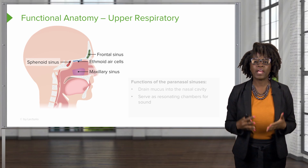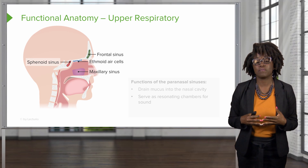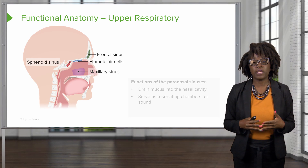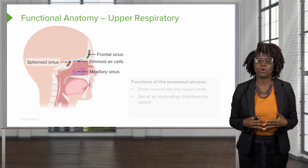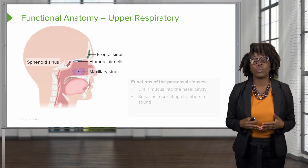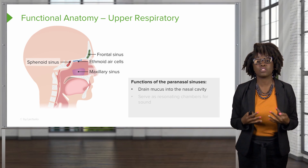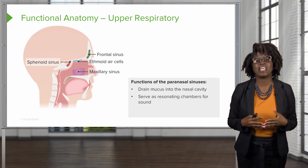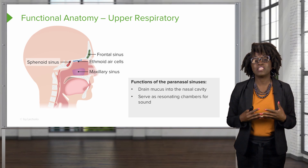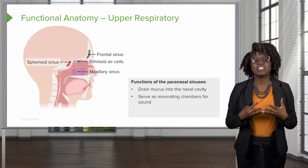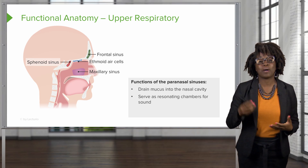Along with this, we also have our paranasal sinuses. There are four sets of paranasal sinuses found in the bones. We have our maxillary, which are under the eyes; the frontal, which are above the eyes; the ethmoidal, which are between the eyes; and the sphenoidal, which are behind the eyes. The function of these sinuses is to drain mucus into the nasal cavity and also serve as resonating chambers for sound. If you've ever had a sinus infection, you might notice that your voice sounds a little different, because it's all part of this chamber that allows for air and sound to come out.